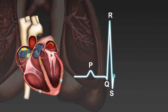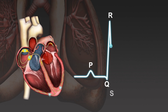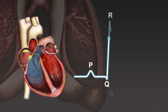Note: this animation shows the ECG recorded from a lead placed at position V6, one of the standard electrode positions to the left of the heart. Leads at other positions detect the electrical activity of the heart from a different point of view, and therefore produce differently shaped ECGs.